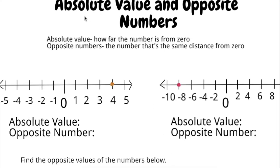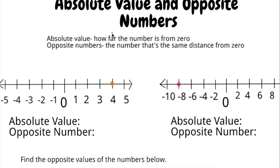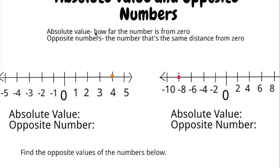Today we're going to be learning about absolute value and opposite numbers. Absolute value is how far away the number is from zero, and the opposite number is the number that's the same distance away from zero as the number given.